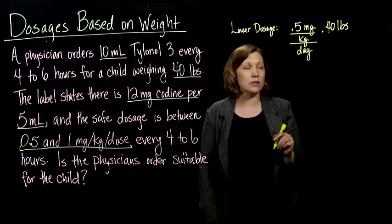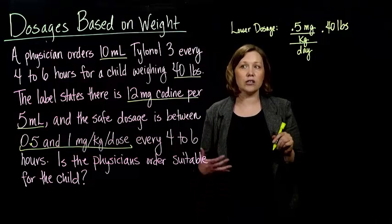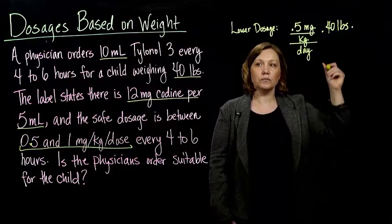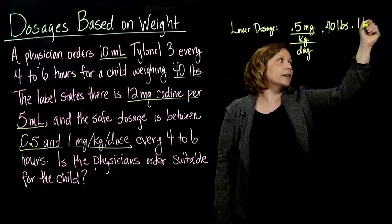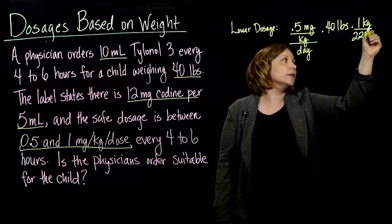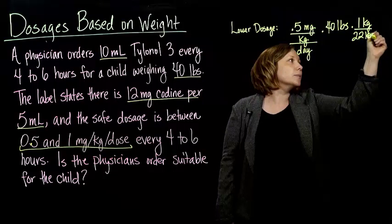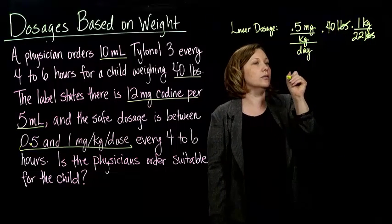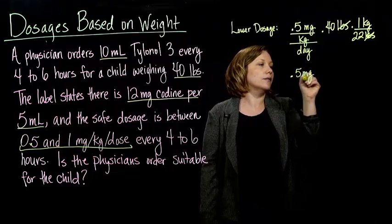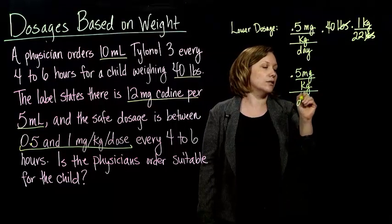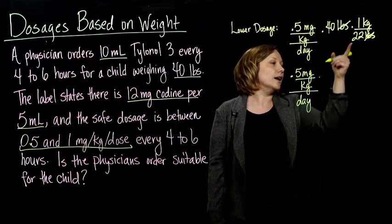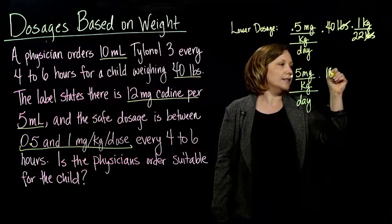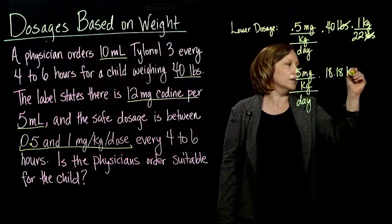We can convert pounds to kilograms by multiplying by 1 kilogram to 2.2 pounds. Our pounds cancel out, and we do 40 divided by 2.2, which gives us 18.18 kilograms. You could have done this conversion before you even started calculating the dosage, or you can do it within the context of the problem — whichever works better for you.